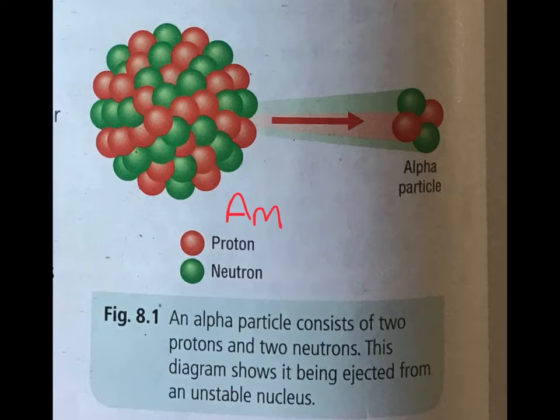The radioactivity chapter, which is chapter 8 in your book. Radioactivity is the spontaneous breaking up of unstable nuclei with the emission of one or more types of radiation. It's only the elements with the radioactive symbol on the periodic table that are radioactive.